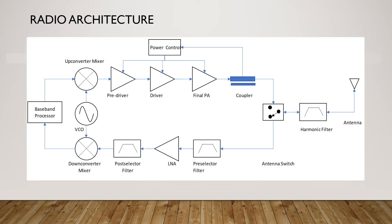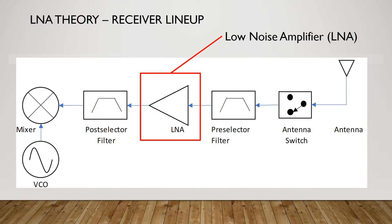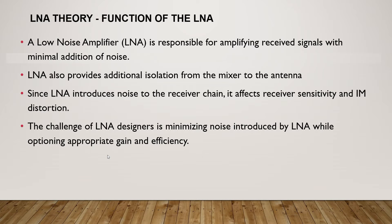The LNA is located at the receiver chain of the radio system. The signal received by the antenna will be routed to the receiver section by the antenna switch. The pre-selector filter will filter out-of-band frequencies and route the received signal to the LNA. The LNA is responsible for amplifying weak received signals with addition of minimal noise. The post-selector filter will further filter the received signal to be passed on to the down-converter mixer and then the baseband processor. The LNA is also responsible for providing additional isolation from the mixer to the antenna.